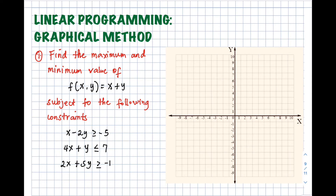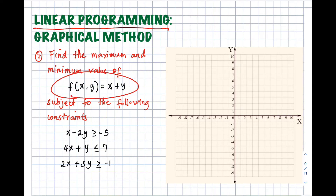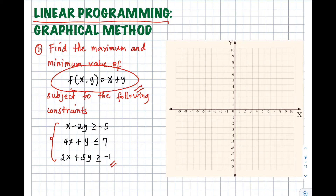Hello class, welcome back to my channel. In this video I will discuss one type of optimization problem called linear programming. Many applications in business and economics involve a process called optimization, in which we are required to find the minimum cost, the maximum profit, or the minimum use of resources. A linear programming problem consists of a linear objective function and a system of linear inequalities called constraints. The objective function gives the quantity to be maximized or minimized, and the constraints determine the set of feasible solutions.